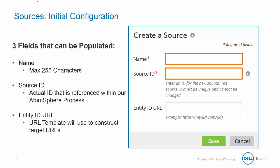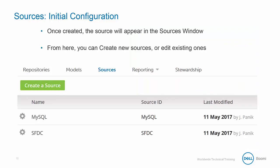The third field is the Entity ID URL. This sets the URL template that MDM will use to construct target URLs for links rendered in a deployed model's data tab to entities in this source system. In the template, the string ID serves as the placeholder for the source entity ID. This option will only function with systems that support deep linking. Once a source is created, it will appear within the Sources tab, where you can confirm the name, source ID, and the last date the source was modified and who modified it.